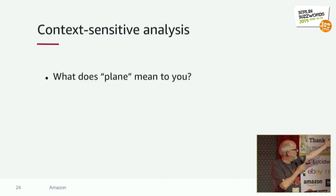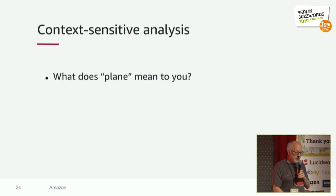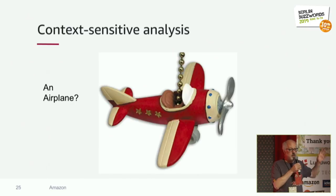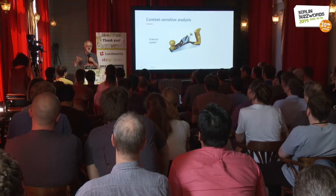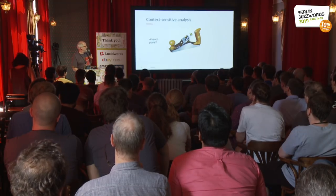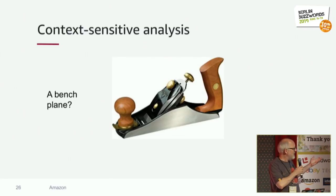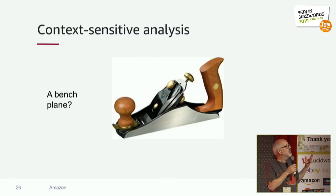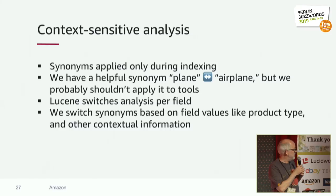Here's one example: what does 'plane' mean? Even in the context of shopping it could mean many things — an airplane, or a woodworking bench plane. Amazon doesn't sell airplanes but does sell toy airplanes. When someone searches for 'airplane' we want it to match documents that only say 'plane', so we apply an airplane-to-plane synonym. But we don't want a search for 'airplane' to find bench planes. The good news is we do synonyms at index time — we know it's a tool, not a toy — so we can apply different synonyms in different contexts. The theme is context-sensitive analysis: applying different analysis chains depending on the category the document is in.